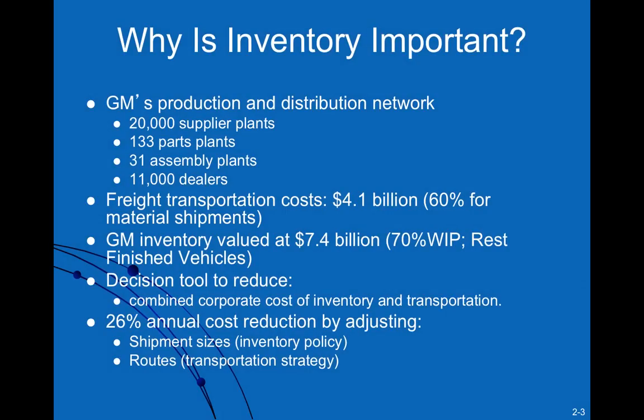If you think about companies like GM, their production and distribution network has many supplier plants, each carrying inventory. GM has 133 parts plants, 31 assembly plants, and 11,000 dealers — all of these individuals in the network carrying inventory. Because there's a cost associated with inventory, one must understand the factors that drive it. Free transportation is another example where we are typically carrying inventories in a pipeline from one point to the next, at four point one billion dollars.